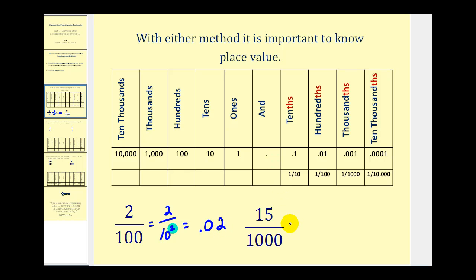On this next example we have fifteen over one thousand, which is the same as fifteen over ten to the third. Again our denominator is a power of ten. So if we have fifteen thousandths, notice the thousandths place value has three digits to the right of the decimal point. So we would have .015 — tenths, hundredths, thousandths — fifteen thousandths. And again notice our denominator was ten to the power of three, and we have three decimal places to the right of the decimal.